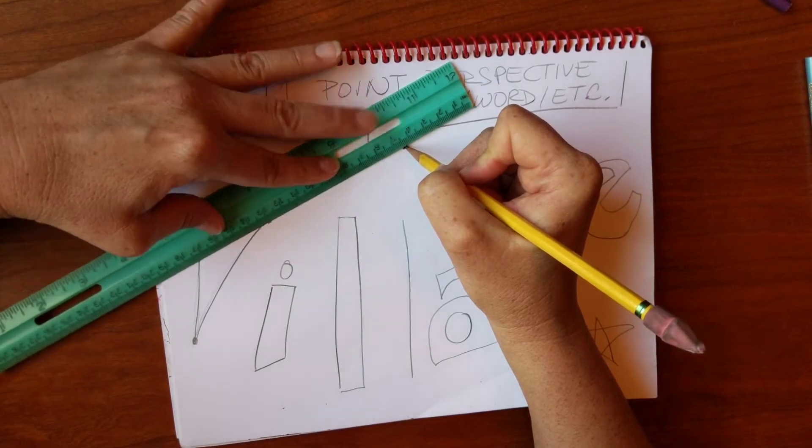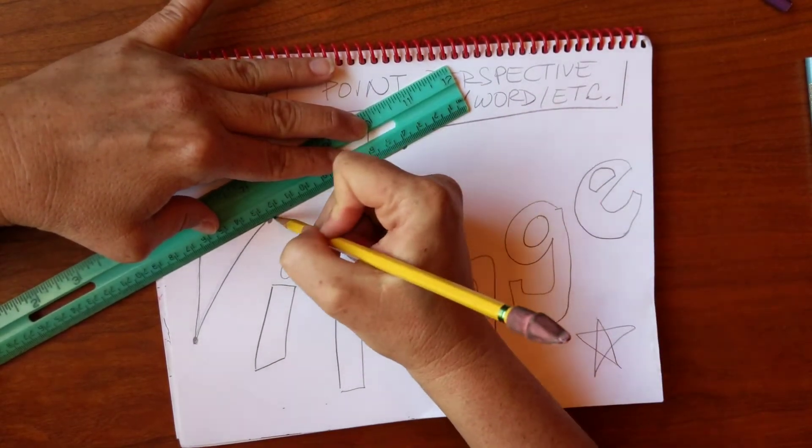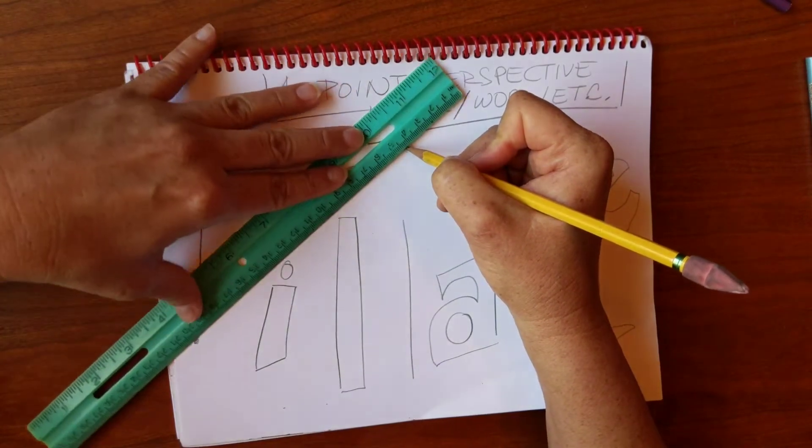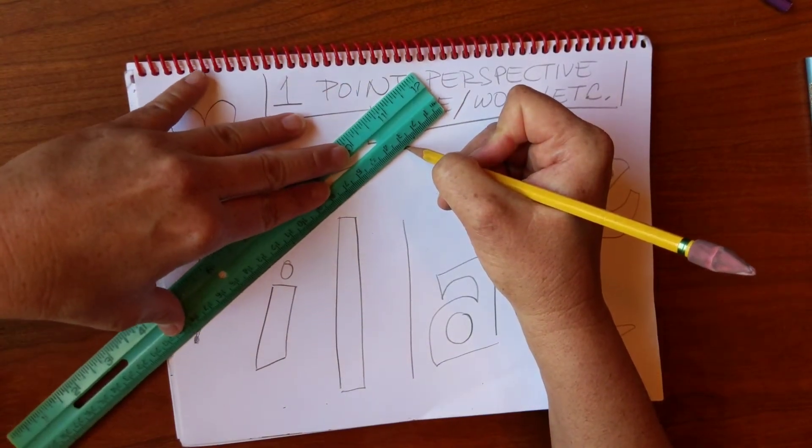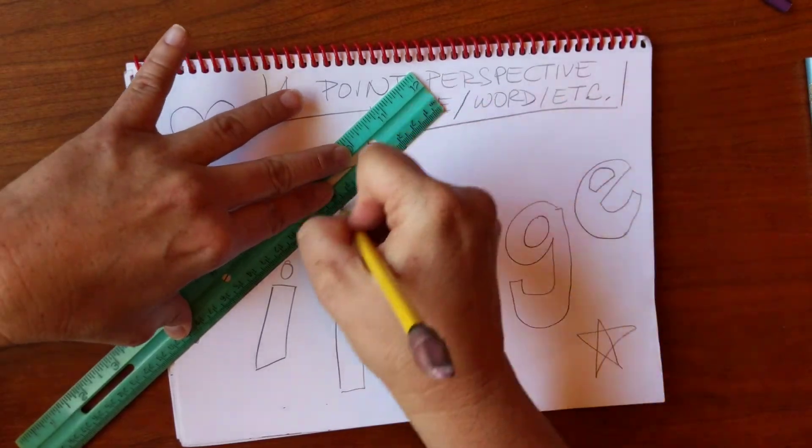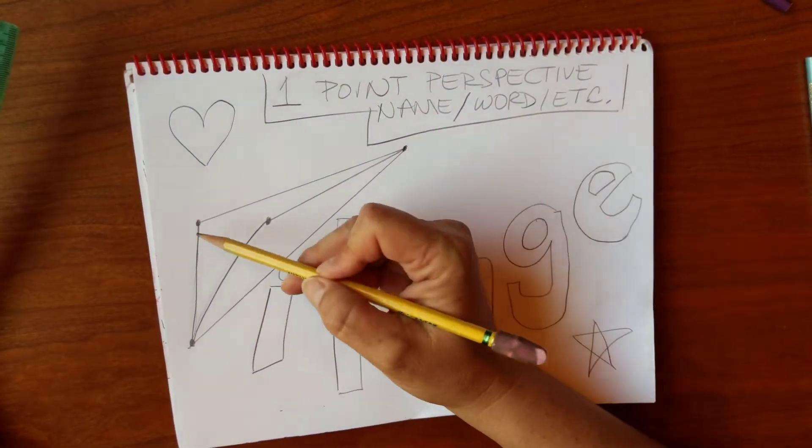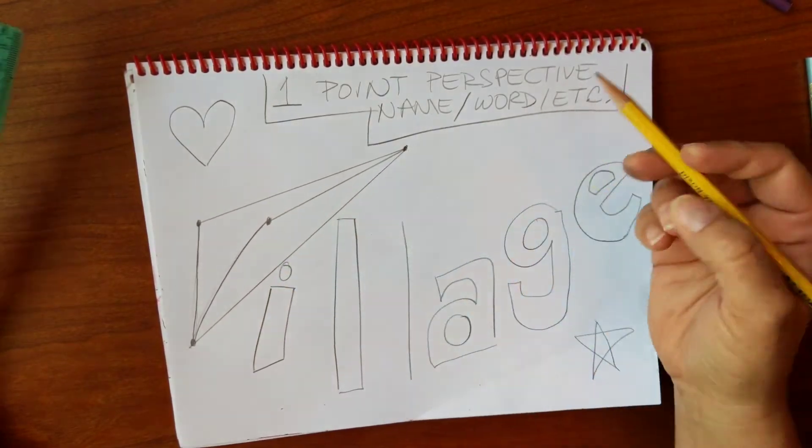Move on to the next one. As straight a line as I possibly can. It looks better when they're really straight. Now this one, yep, there we go. And it kind of looks like a paper thin letter.